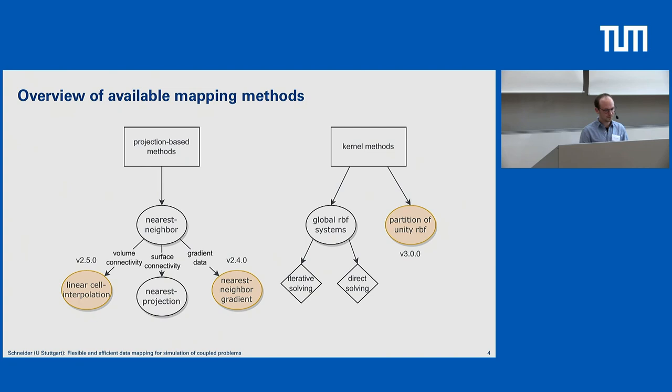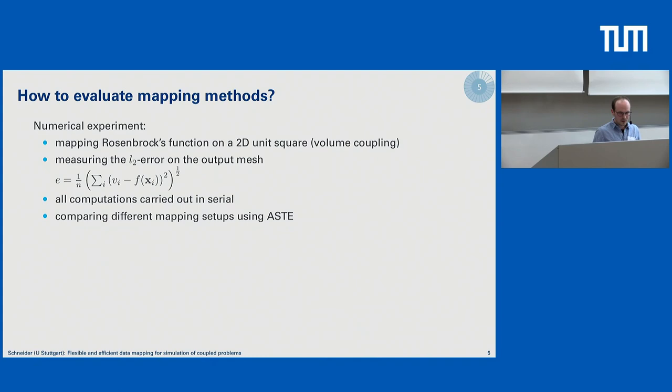Completely different from these methods, we have our kernel methods. We have on one hand the global RBF mapping methods, which we can solve either iteratively or in a direct fashion, and we have partition of unity RBF methods, which we will talk about in the next few minutes. For the user, the main question is: which mapping method do I select for my specific application?